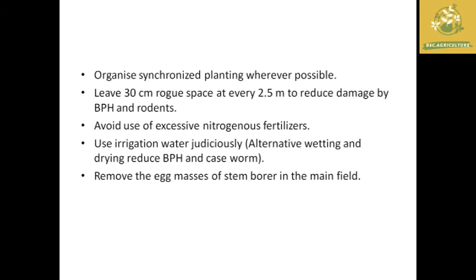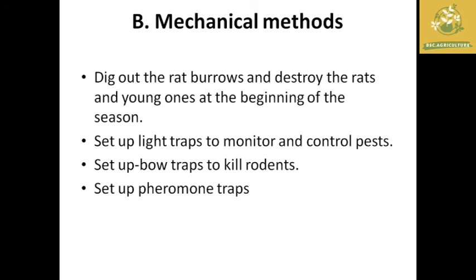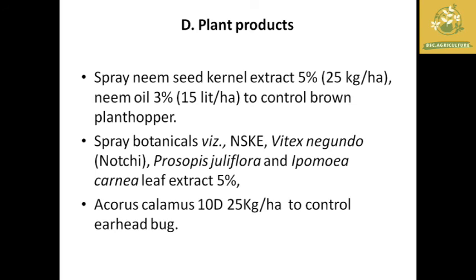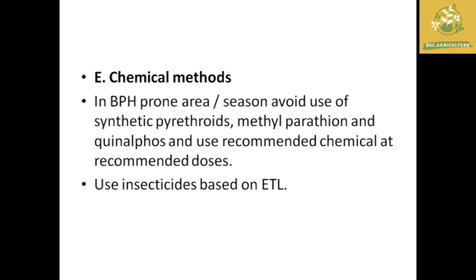Mechanical methods for IPM: set up light traps and bow traps to kill rodents; set up pheromone traps; dig out rat burrows and destroy rats and young ones at the beginning of the season. Biological methods: release Trichogramma japonicum and Trichogramma chilonis; release Platygaster sp. parasitic wasps; put up owl perches to reduce rat damage. Plant products: use neem seed kernel extract and spray botanicals like NSKE, Prosopis juliflora, and Ipomoea carnea leaf extract.